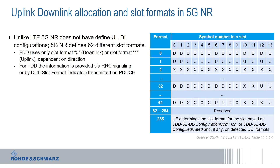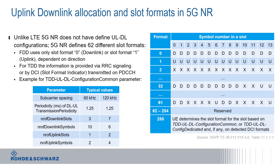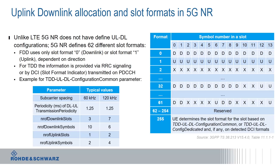The slot format indicator points into that particular table — there are up to 62 different formats. A very important statement here is that the UE determines the slot format for the slot based on the TDD uplink/downlink configuration common, which is signaling information provided to the device. Typical parameters for such a configuration, for different subcarrier spacings, can cause a different periodicity and so forth.